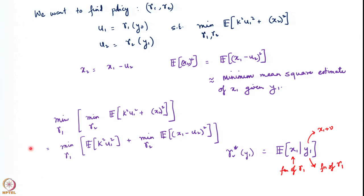Let us go back and try to understand intuitively what is happening in this problem. The second stage problem is really about estimating x_1 using the information that we have. Knowing this, we should ask ourselves: what is the first stage doing? What is the choice of gamma_1 really about?